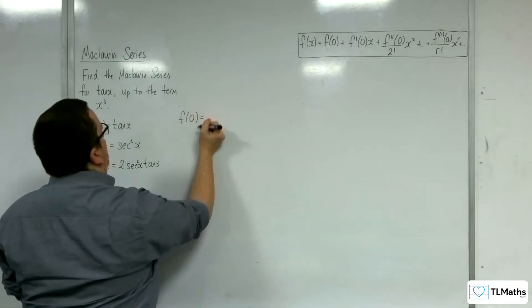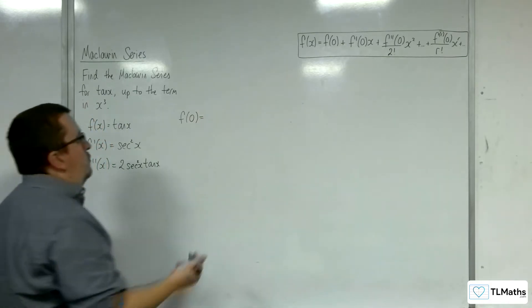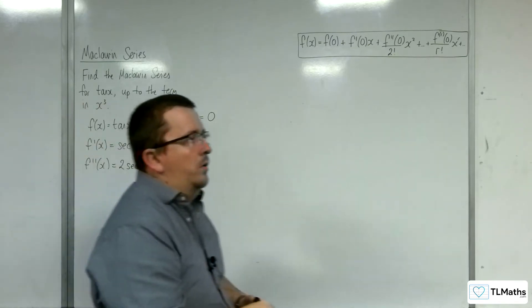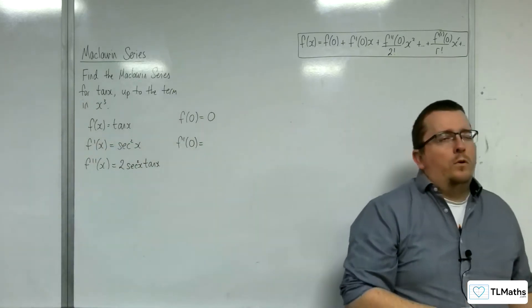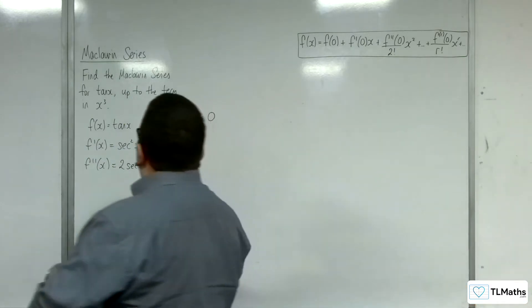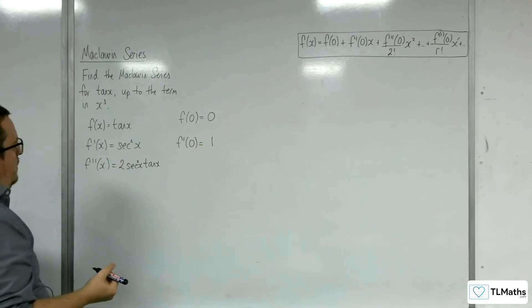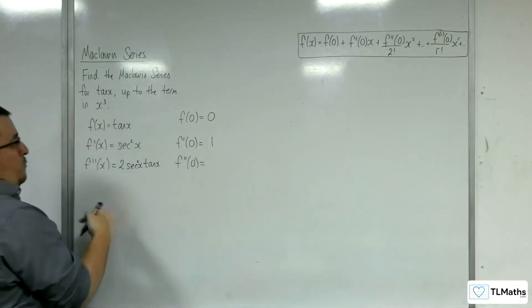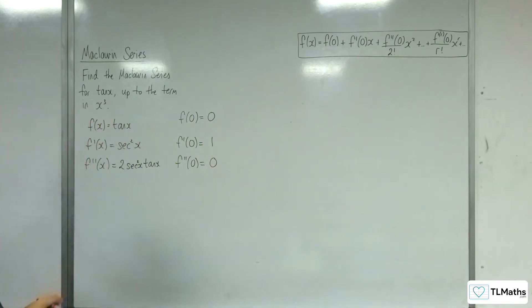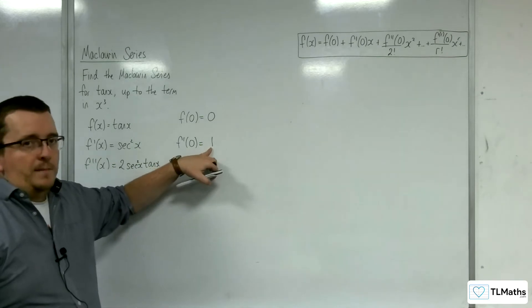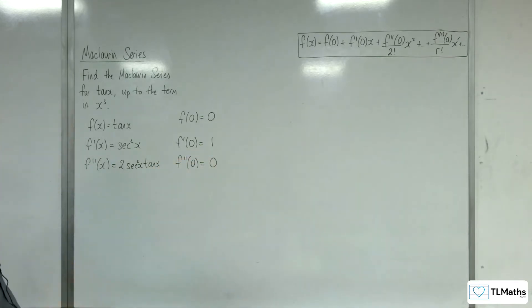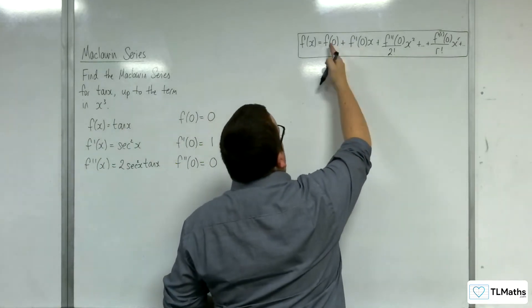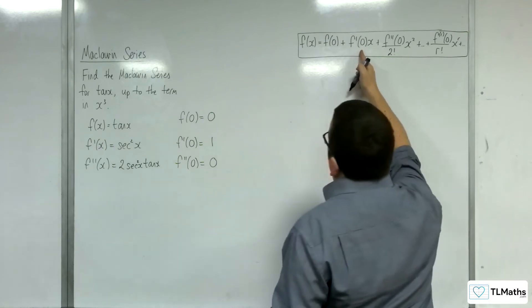So f of 0 — tan of 0 is 0. The first derivative evaluated at 0: cosine of 0 is 1, so that'll be 1 over 1 squared, just 1. And the second derivative evaluated at 0: well, you've got tan of 0, which is 0. So currently we're just going to have one term. We need up to the term in x cubed, so we've currently got the x term — that's going to be 1x.